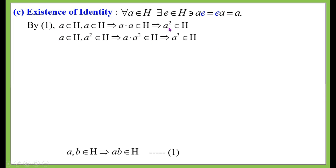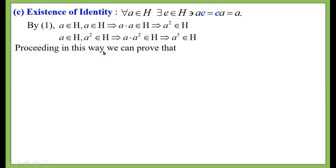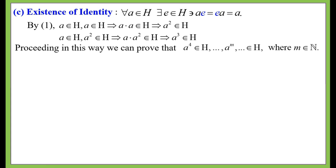Take a ∈ H; we have shown a² ∈ H. By the hypothesis, taking a and a², we get a·a² = a³ ∈ H. Proceeding in this way, a⁴ ∈ H, a⁵ ∈ H, and in general aᵐ ∈ H for any natural number m. Thus a, a², a³, a⁴, ..., aᵐ all belong to H — any positive integral power of a belongs to H.